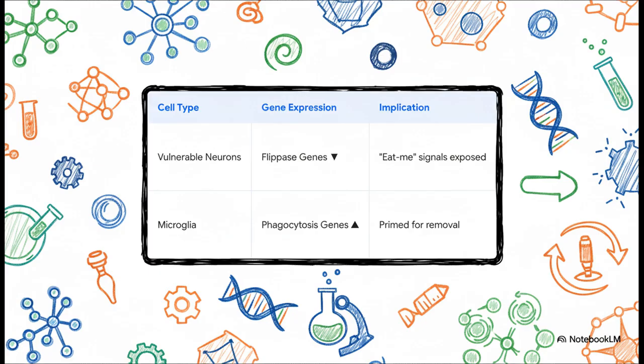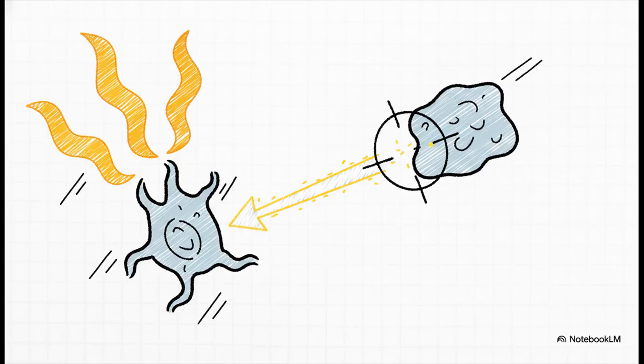Now, at the exact same time, the brain's cleanup crew, the microglia, were cranking up the very genes they used to detect those signals and gobble up damaged cells. Cosmos called this whole thing a prophagocytic axis, which is really just a fancy scientific way of saying it's a direct pathway for targeted removal.